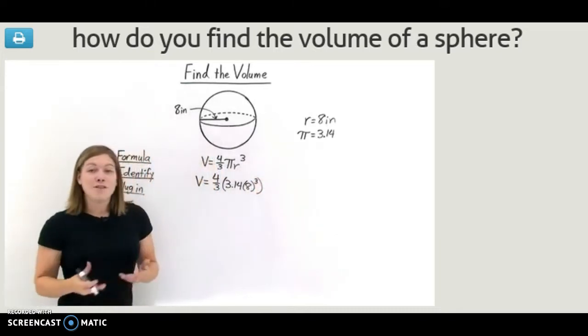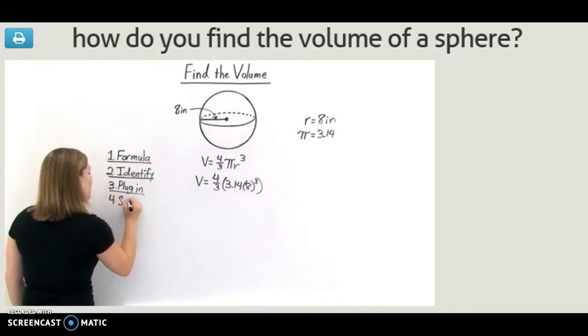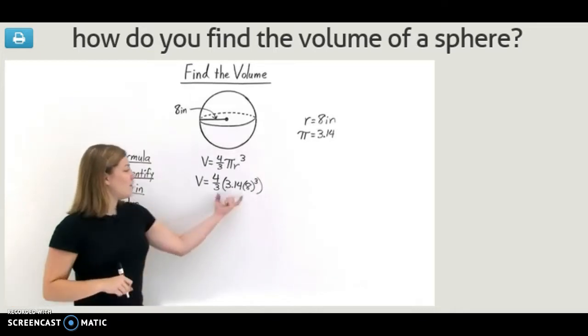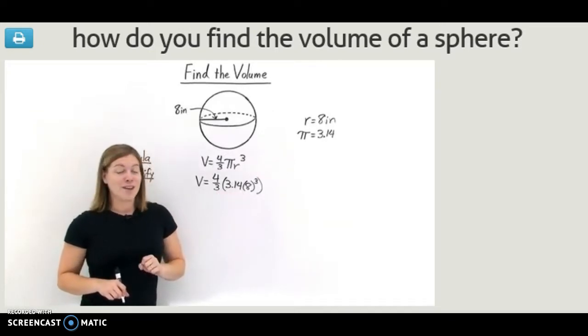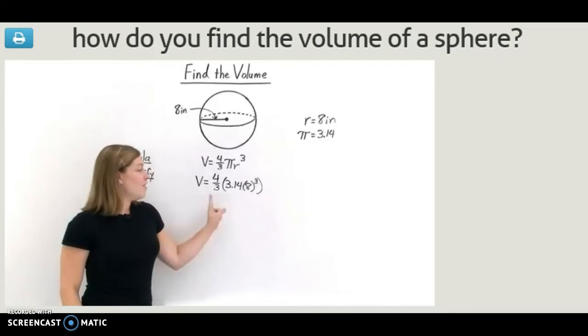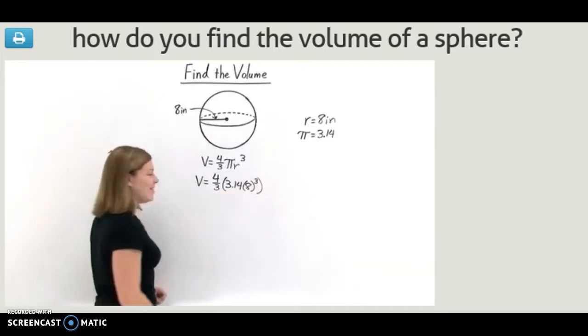Now, in order to get the volume of the sphere, we need to take this equation and solve it for v. To do that, we need to take this right-hand side and simplify it using the order of operations. According to the order of operations, the first thing we need to do here is take 8 cubed.